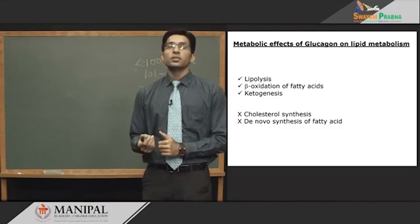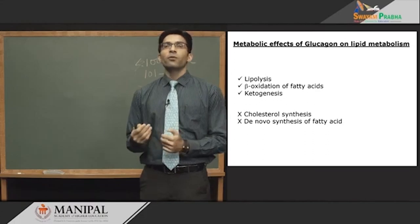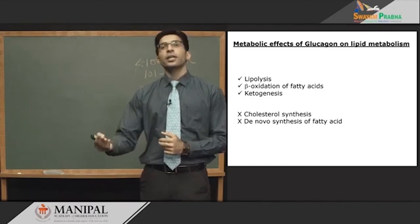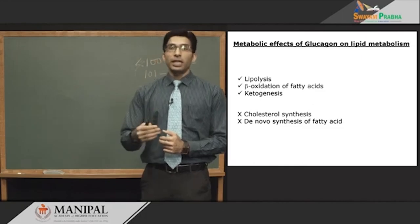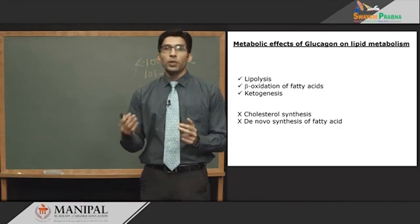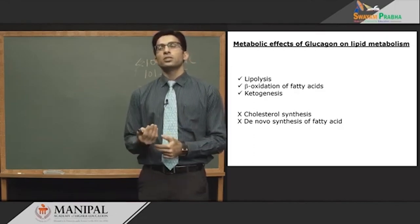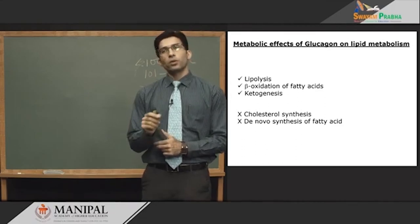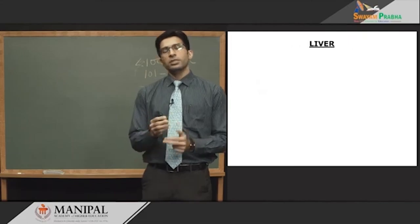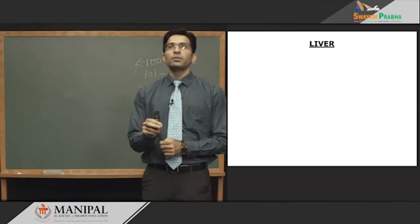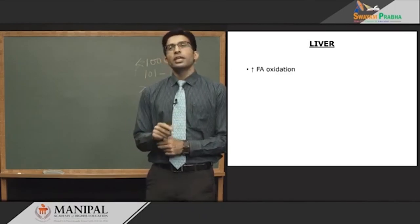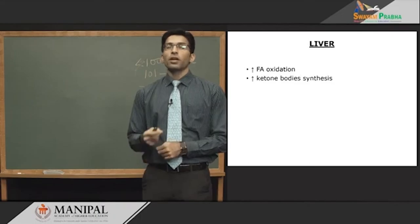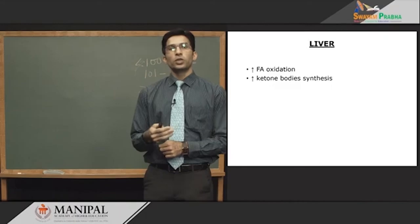Glucagon also decreases de novo synthesis of fatty acid. De novo synthesis takes place in the well-fed state in the presence of insulin, when excess glucose is converted to fatty acid and later to triacylglycerol. In conditions like diabetes when glucose is not properly utilized, glucagon inhibits de novo synthesis of fatty acid by phosphorylating acetyl-CoA carboxylase. At the liver level, increased fatty acid oxidation (beta-oxidation) gives energy, and ketogenesis increases.